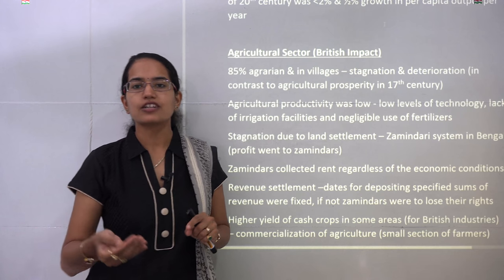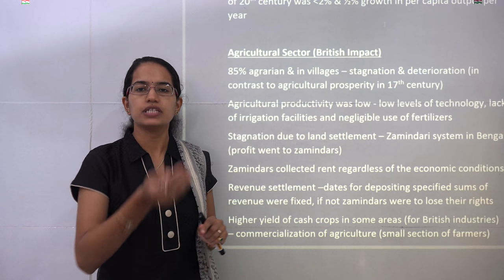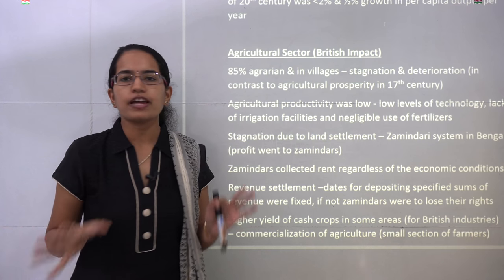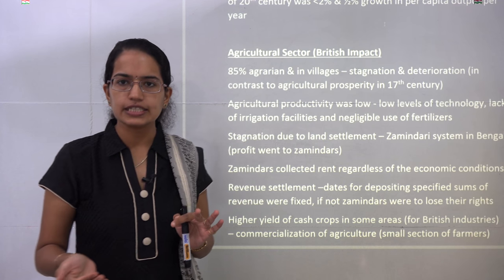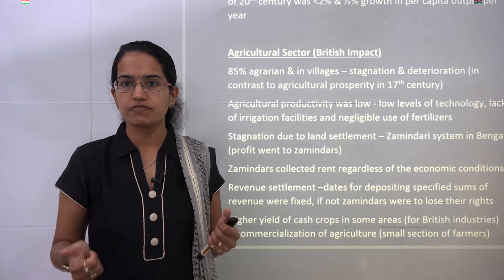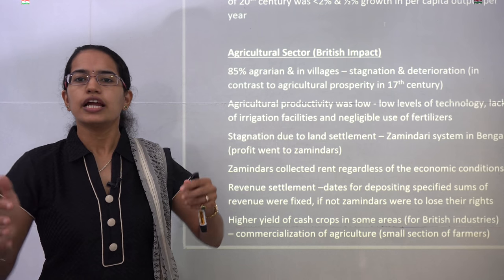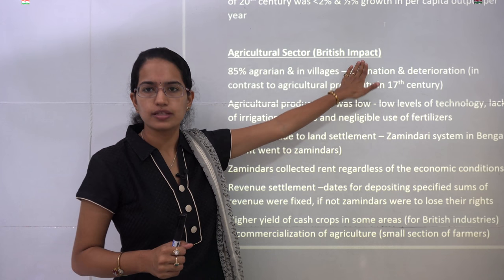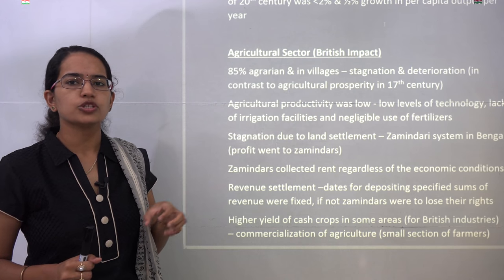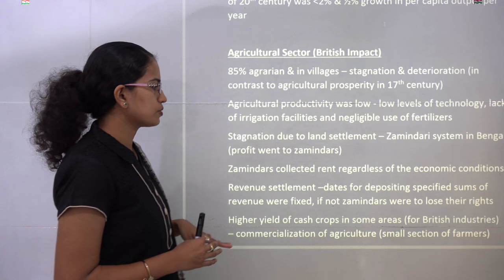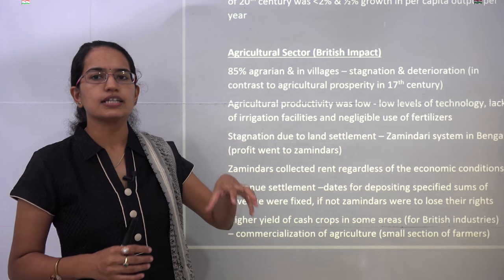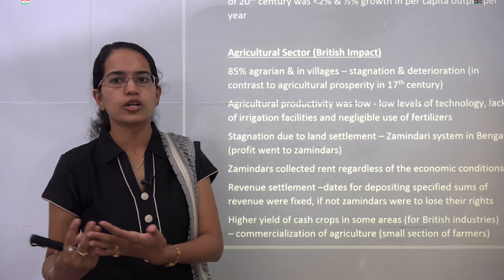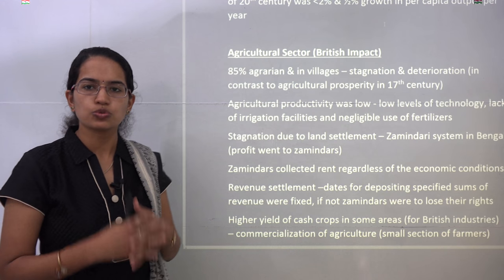We will now understand the British impact on various fields separately, starting with agriculture, then industry, foreign trade, and so on. 85% of the population was working in agriculture. India was basically an agrarian and self-sufficient society — during the 17th century India had a well-satisfied, self-sufficient agriculture. However, the situation worsened with the British advent. Land settlement systems and revenue settlements came into being, with zamindars collecting rent whether crops were good or not.